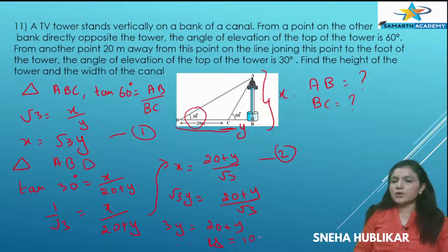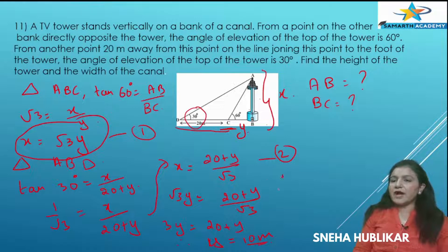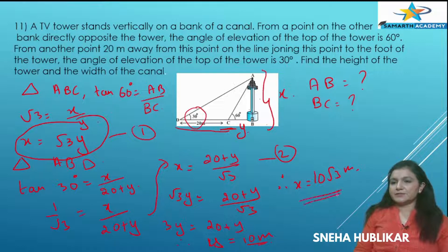Y equals 10 meters — that is the width of the canal. Now we need to find the height of the tower: X equals root 3 Y, therefore the height of the tower X equals 10 root 3 meters. So the width of the canal is 10 meters and the tower height is 10 root 3 meters.